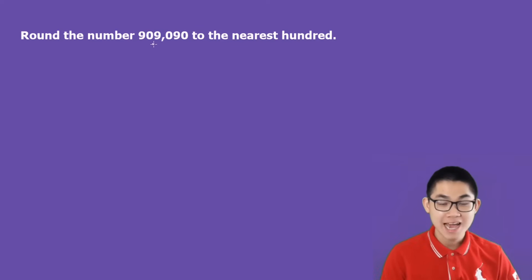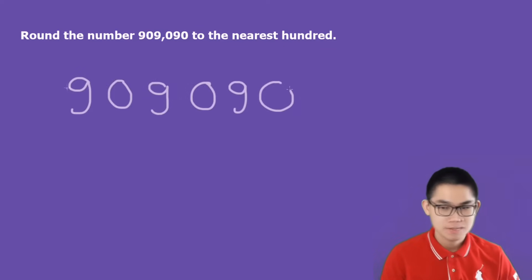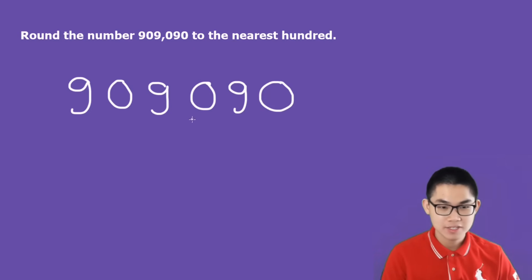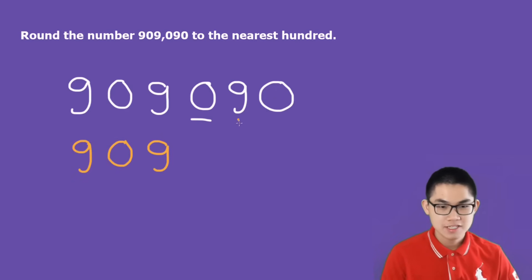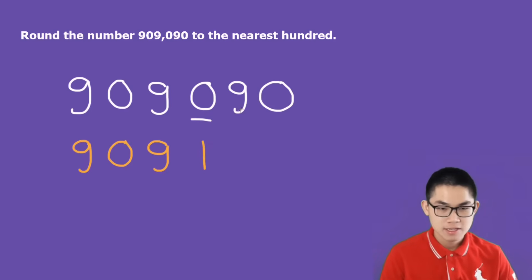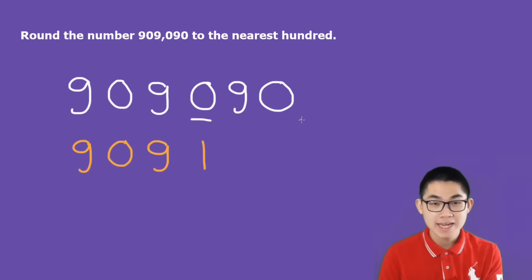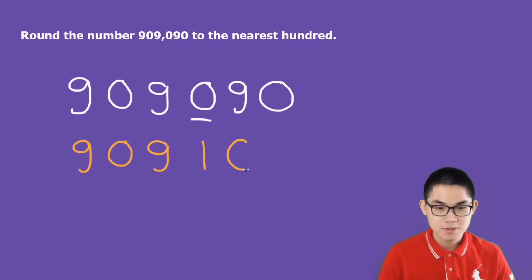Round the number 909,090 to the nearest hundred. This is the ones place, this is the tens place, and this is the hundreds place. All the numbers to the left, we copy them down — so 9, 0, 9. Since this number is larger than 5, 0 becomes 1. And then all the numbers to the right of this zero become 0.